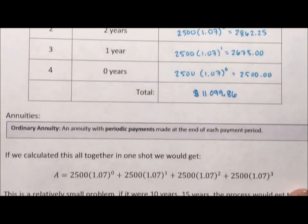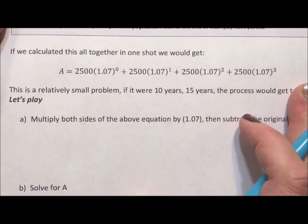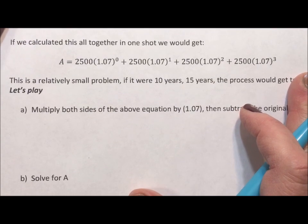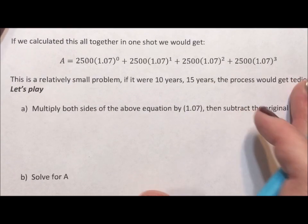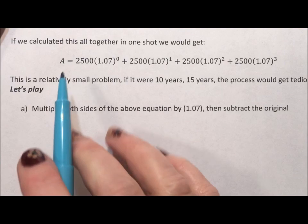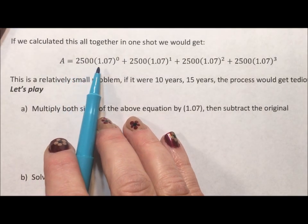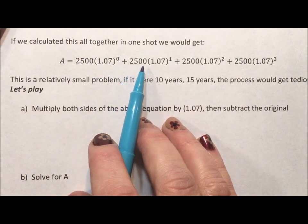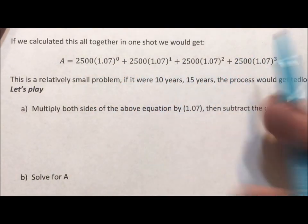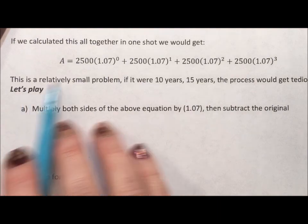Okay. So what we're going to do is we're going to find a way where we could have thrown this into the calculator in one step versus multiple steps. So this is what we did. From the table, we took 2,500, 1.07 to the 0 plus 2,500, 1.07 to the 1 and so on. That was the table up above. So we're going to play with this.